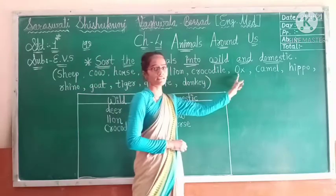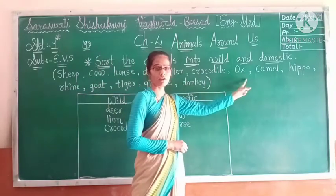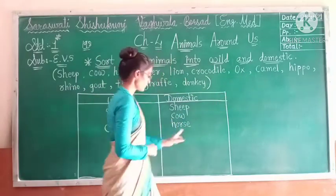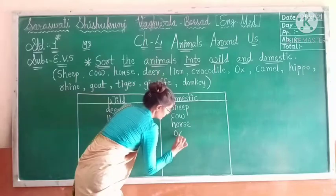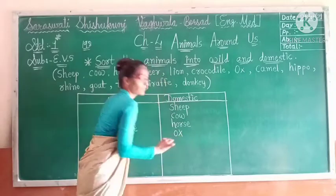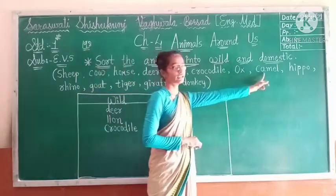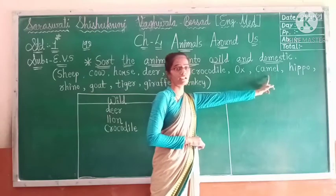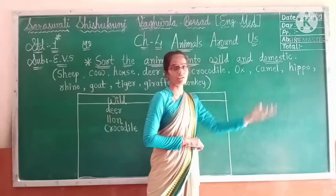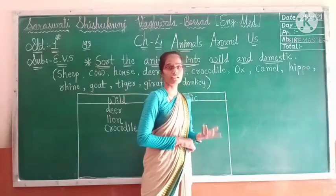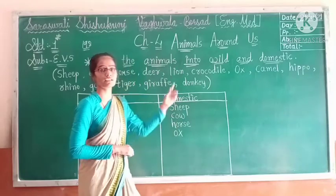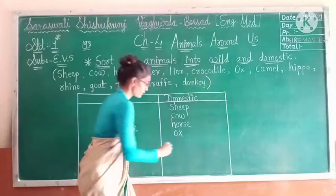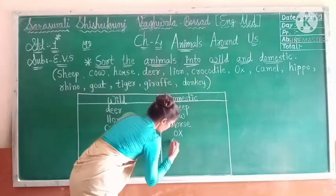Then after that is ox. Ox is a domestic animal, so we will write ox here under domestic. Then after that is camel. Camel we can also see in our surroundings, so it is also called a domestic animal, and we will write camel here.